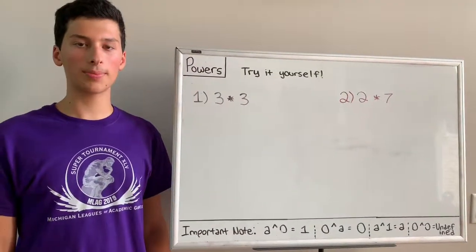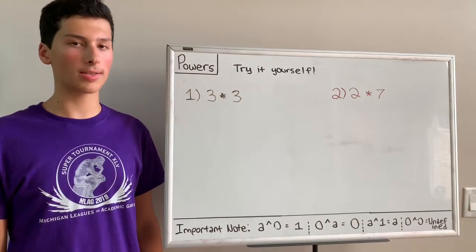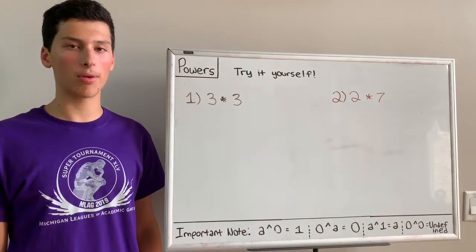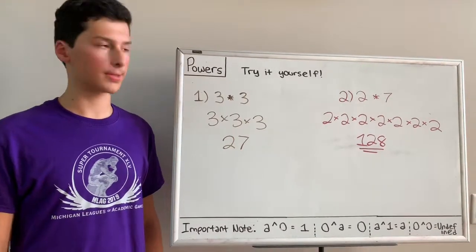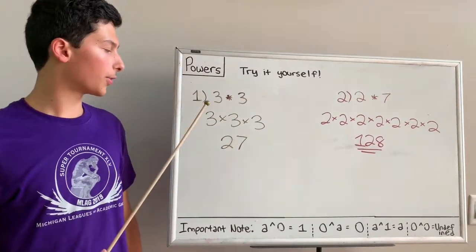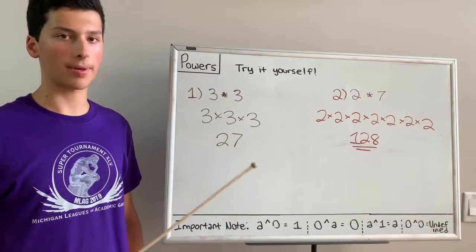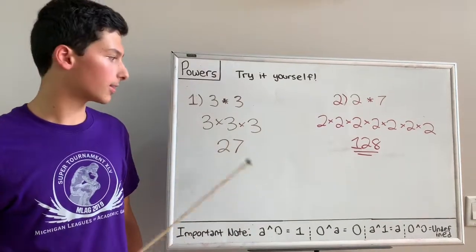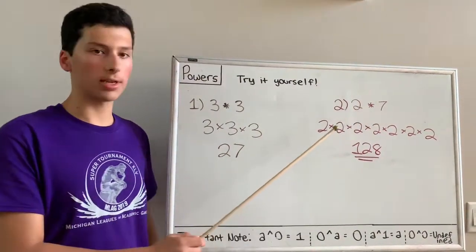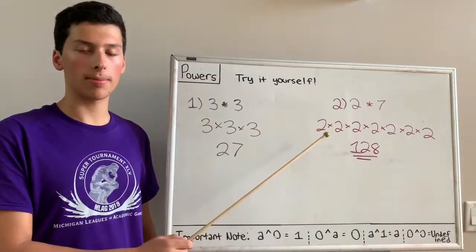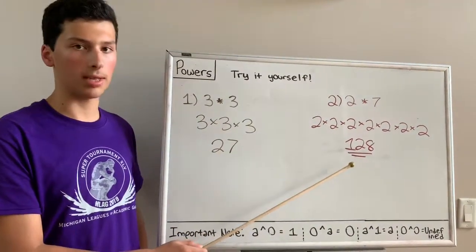Here are some practice problems. Try them yourself, then pause the video and we'll go over them. For 3 to the power of 3, we would take 3 and multiply it by itself 3 times to get 27. For 2 to the power of 7, we take 2 and multiply it by itself 7 times to get 128.